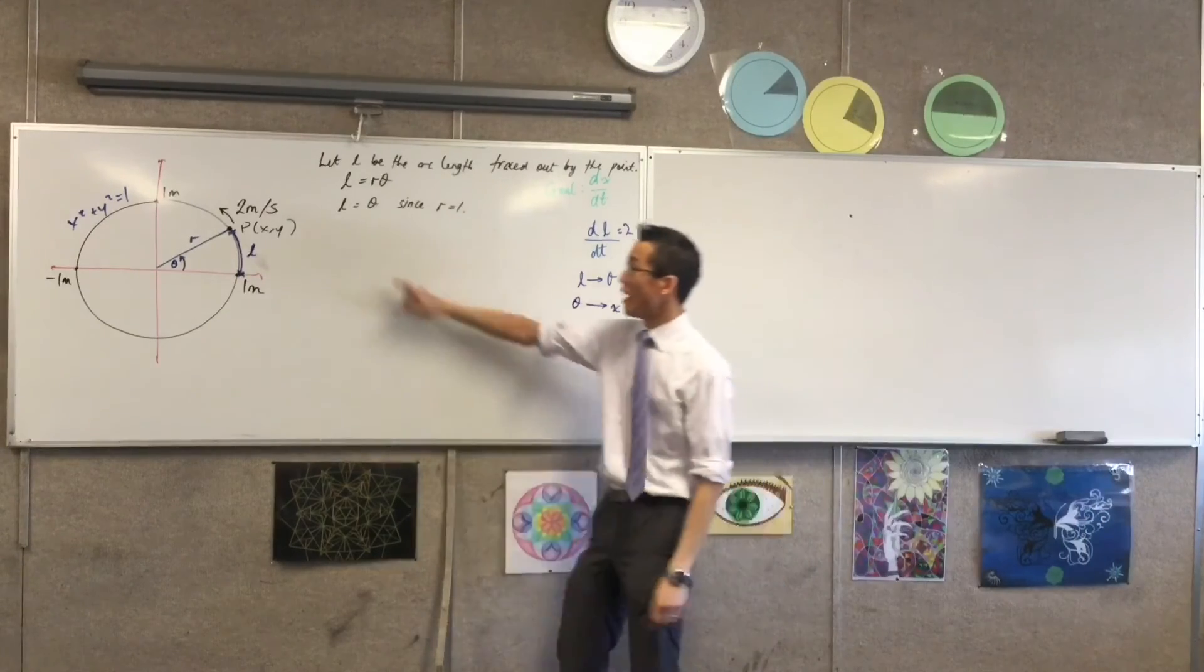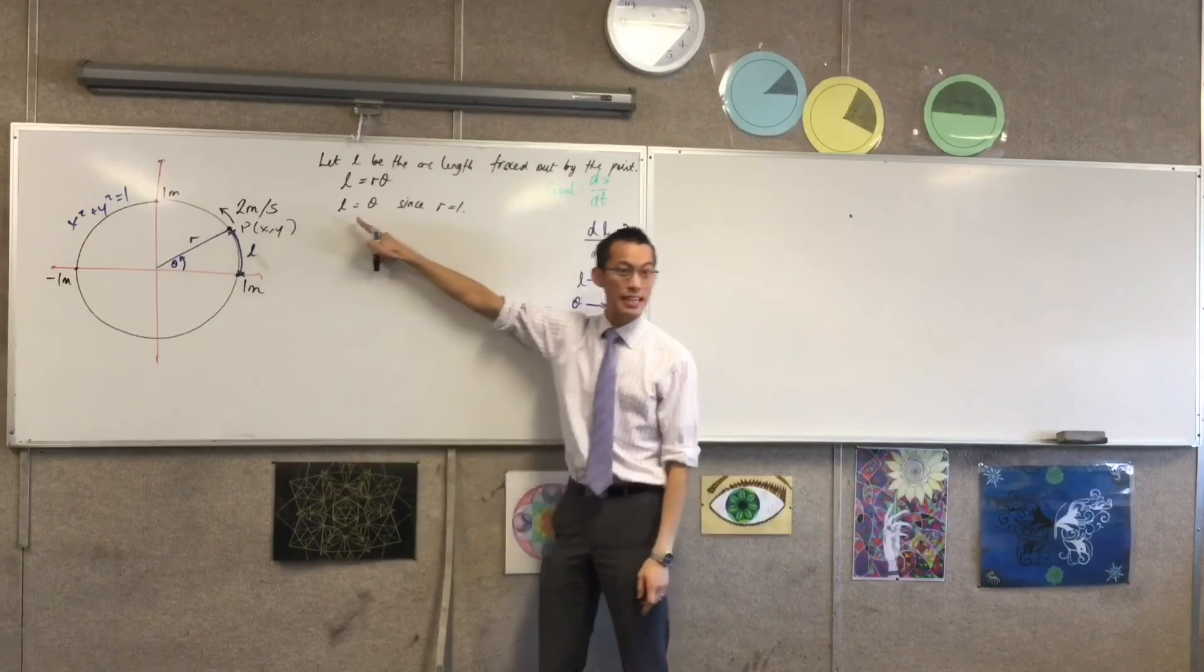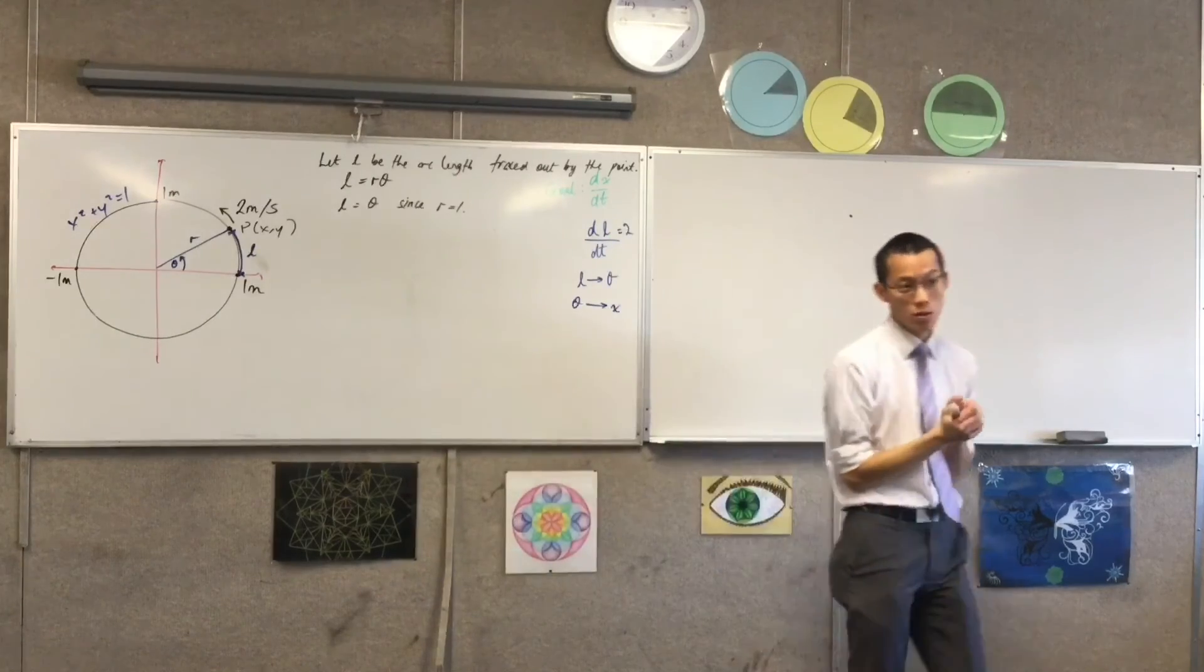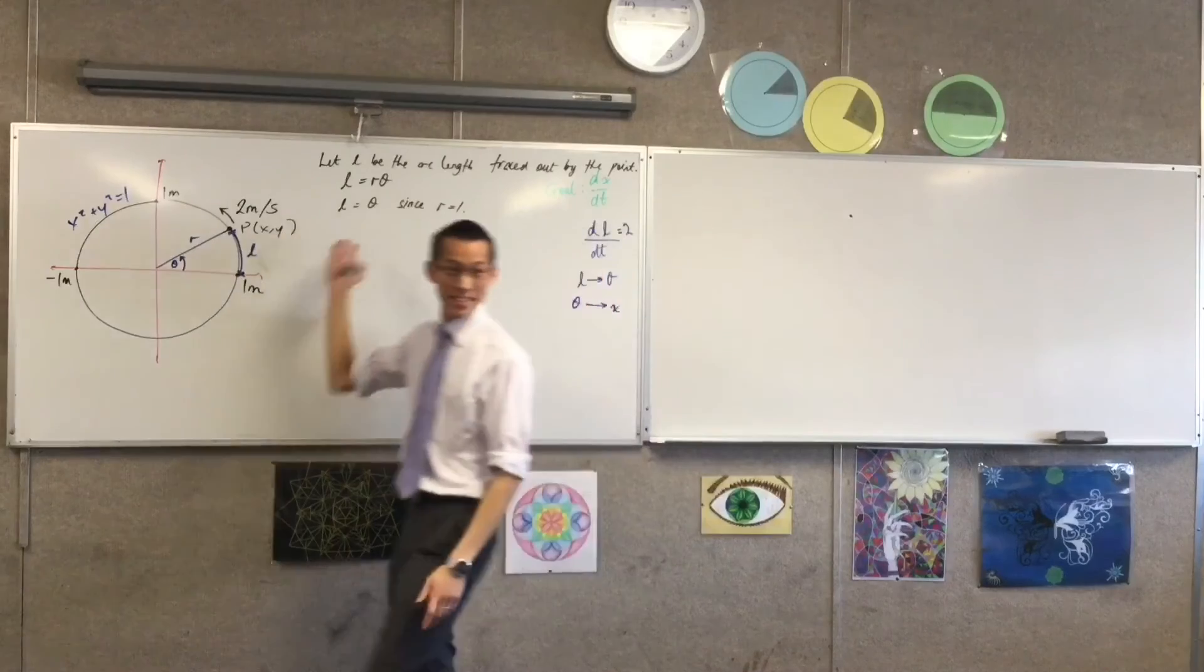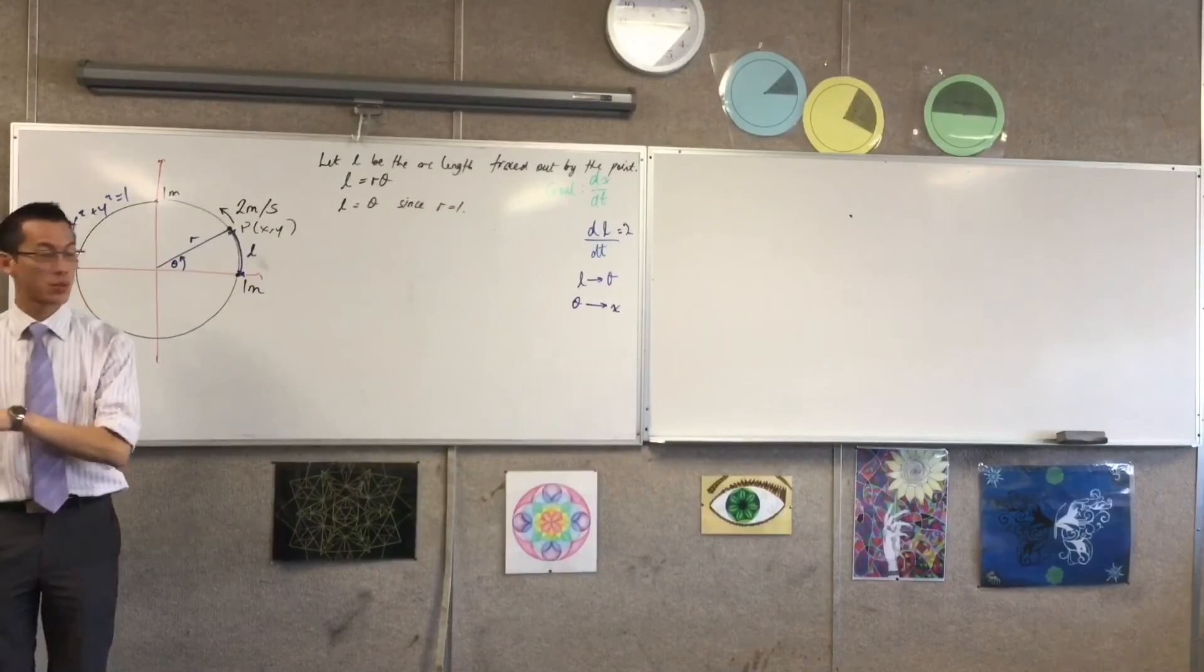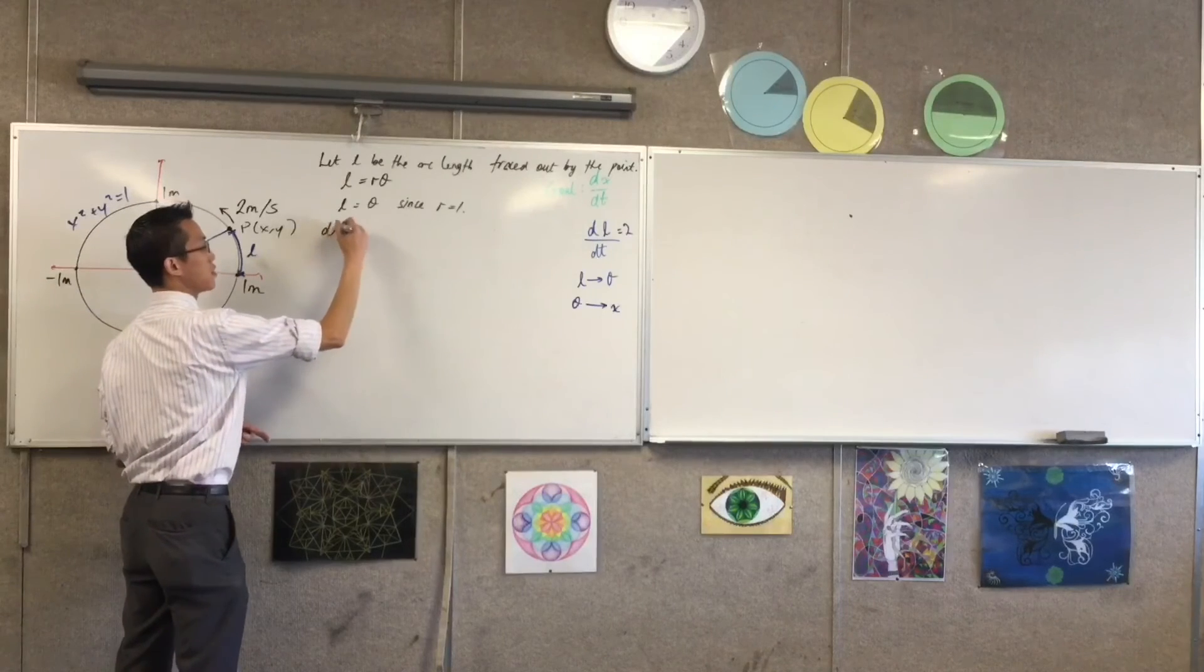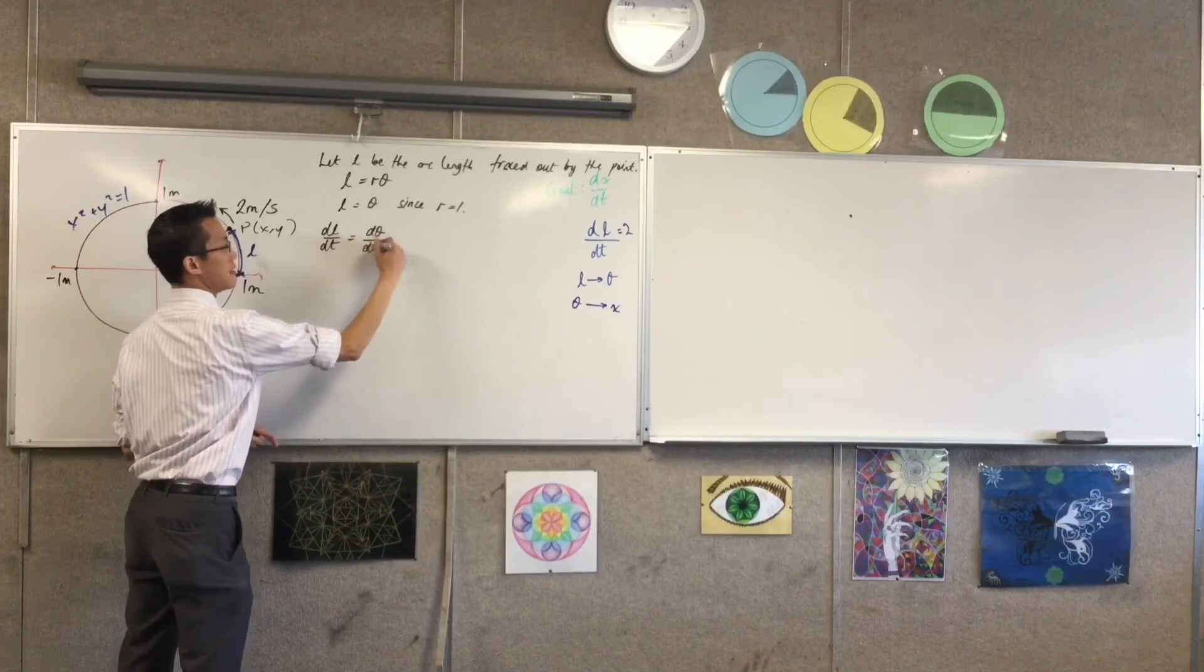So, that means when L changes by one, theta should change by one, right? In other words, dL and dtheta, with L and theta the same, then dL and dtheta are also the same. Does that make sense? So, therefore, if I were to, say, take this line and differentiate both sides with respect to time,